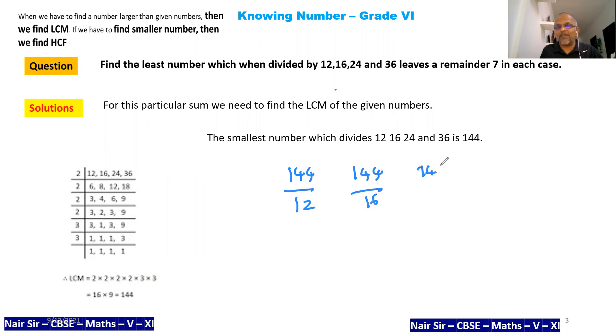144 divided by 16, you can do this. 144 divided by 24 and 144 divided by 36. All of this will be divisible. And what are you going to do? You are just going to add 7 to this. Get the concept clear, kids.